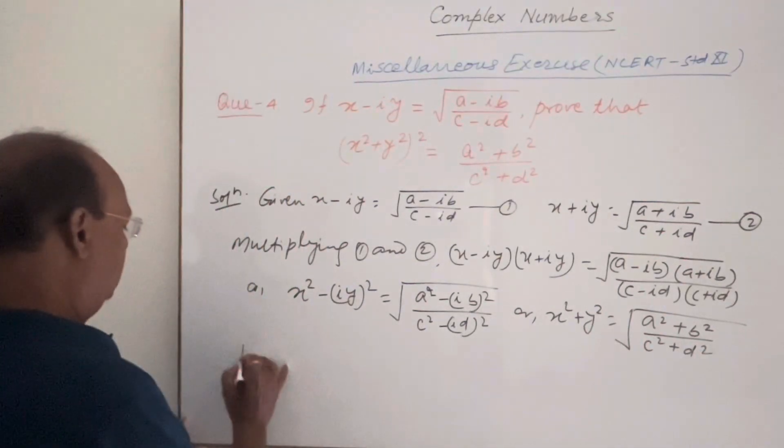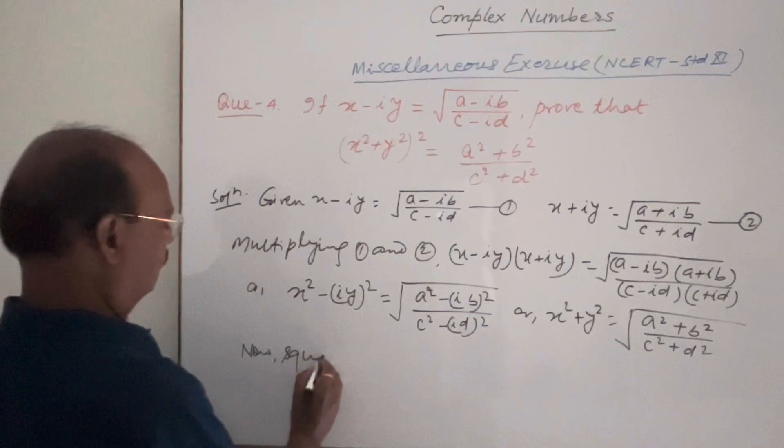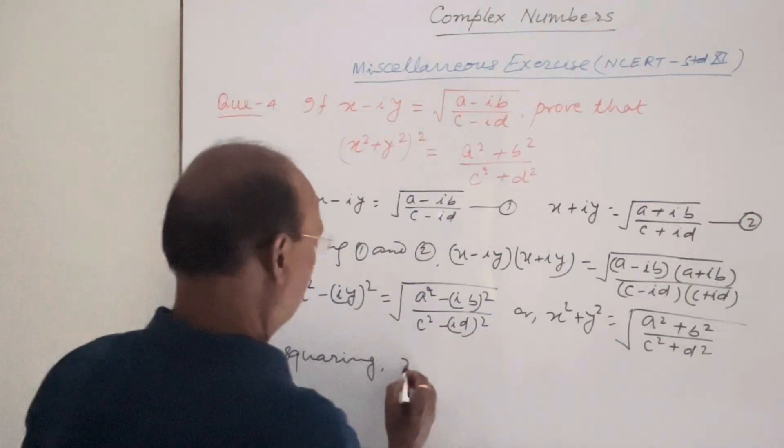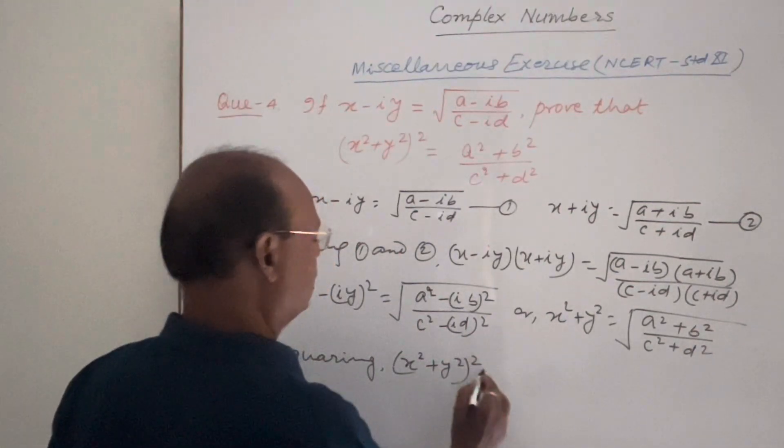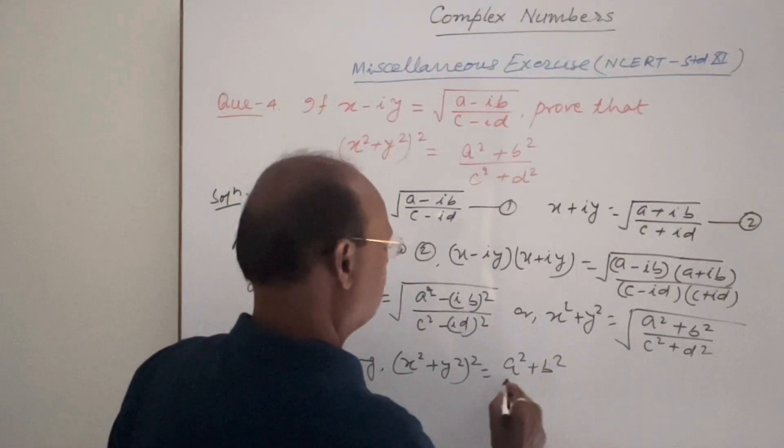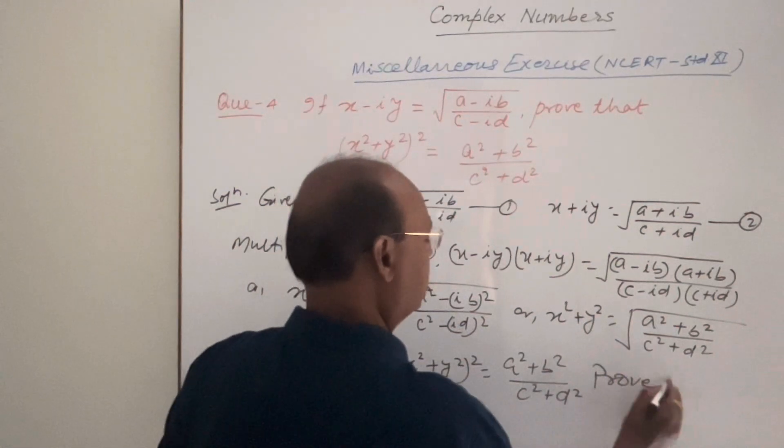So now squaring, we are getting here x square plus y square whole square is equal to a square plus b square upon c square plus d square. So we got the result here, it has been proved.